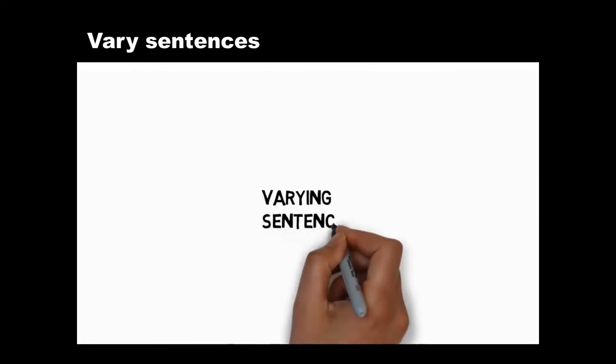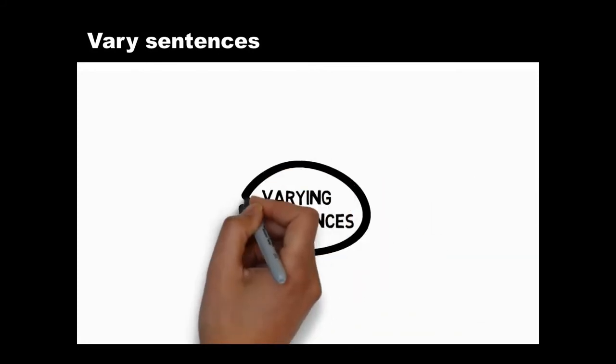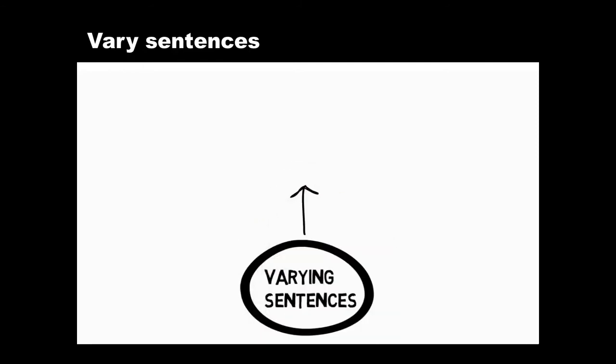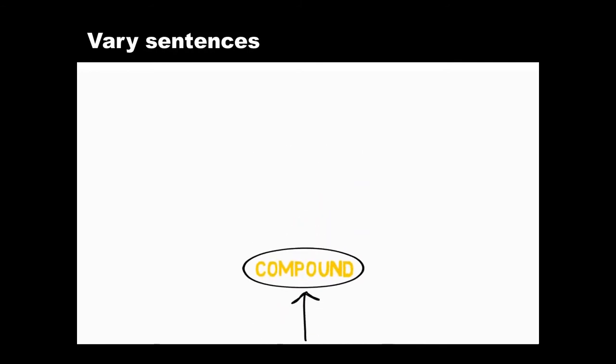So far we've been looking at simple sentences and how to vary them. Simple sentences have one independent clause and express one main idea. You can also vary your writing by creating compound sentences. These combine more than one main idea. Let's look at two different ways to join these ideas.